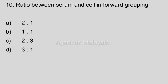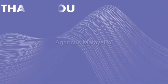Tenth question: Ratio between serum and cell in forward grouping. Answer options — Option A: 2 is to 1. Option B: 1 is to 1. Option C: 2 is to 3. Option D: 3 is to 1. Correct answer: Option A, 2 is to 1.